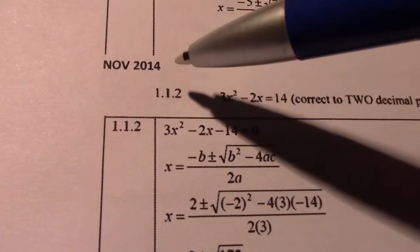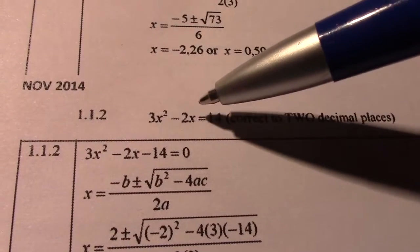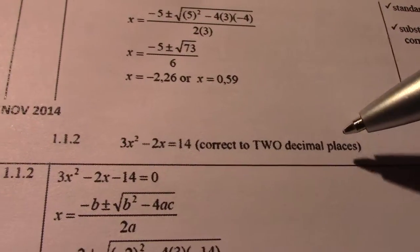All right, Mr. Simons here. Welcome back, November 2014. Again, 3x squared minus 2x equals 14, correct to two decimal places.